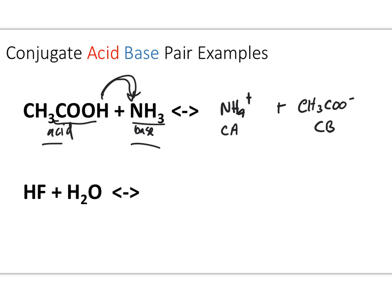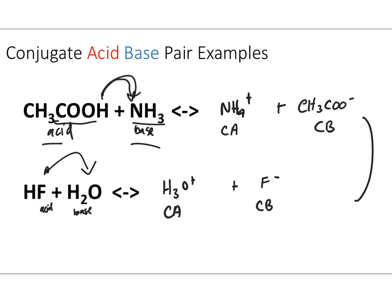We can apply this same concept to HF and H2O. HF is going to be our acid, and H2O is going to be our base in this case. Even though HF is not a strong acid, it's a stronger acid than water. So the acid transfers its proton to H2O, producing H3O+ and F−. H3O+ is the conjugate acid because it's the product of picking up a proton, and F− is the conjugate base because it's the leftover after the acid gives away its H+ ion.